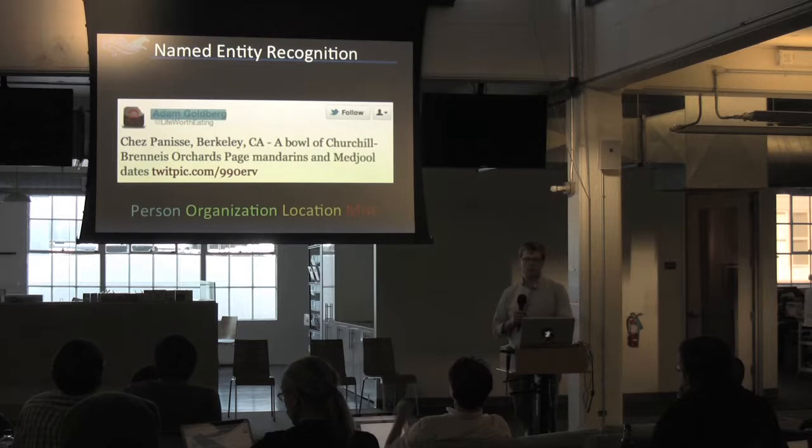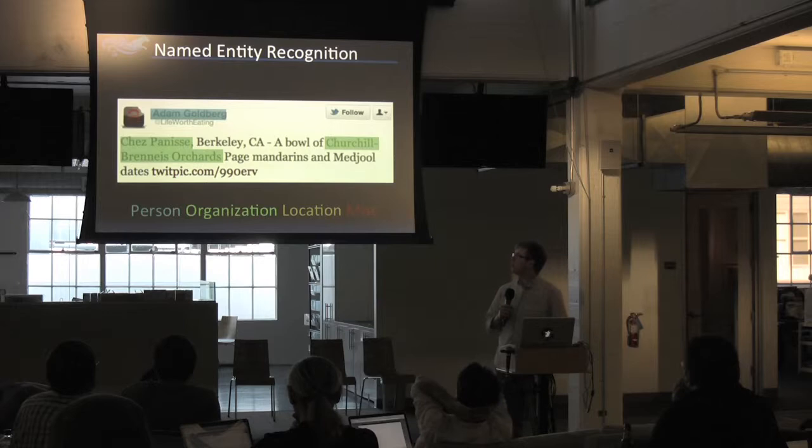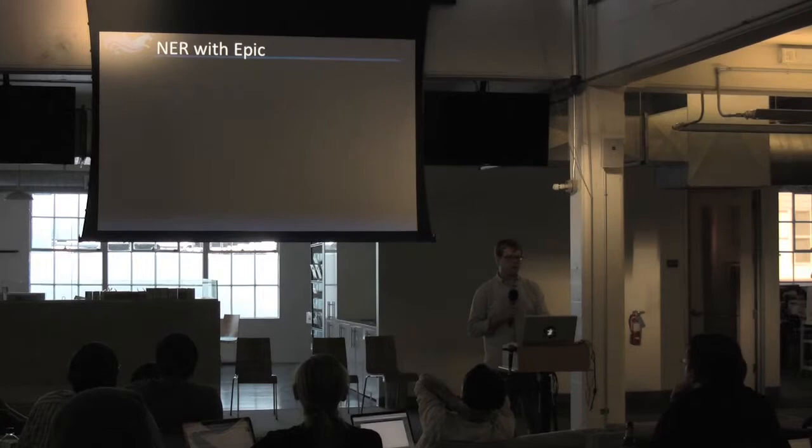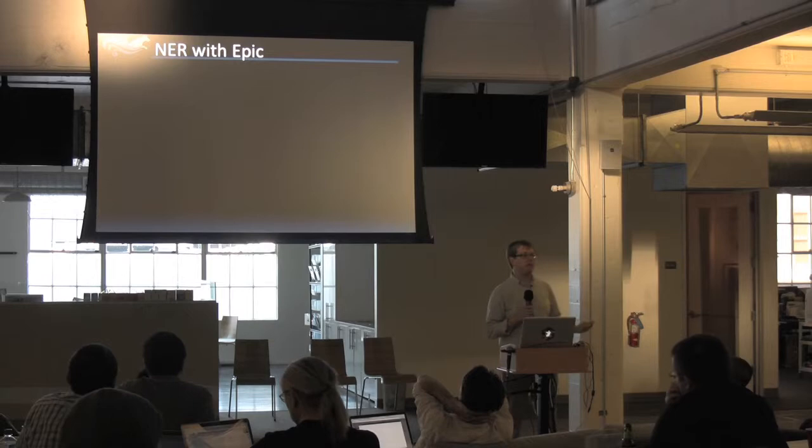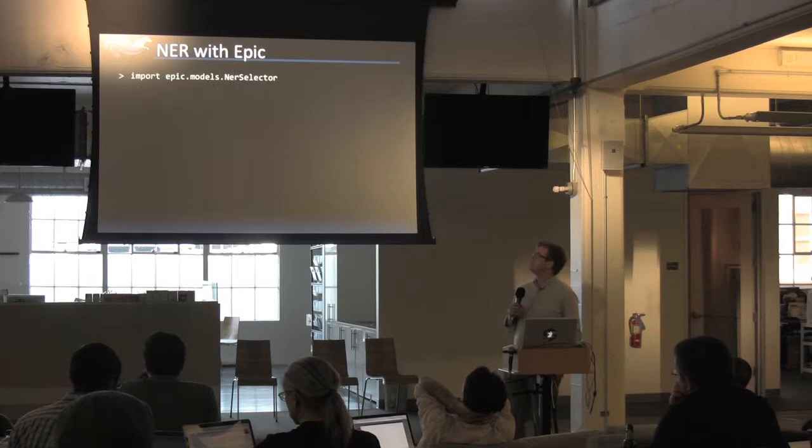So Adam Goldberg is a person. Chez Panisse and Churchill-Bernet orchards are organizations. Berkeley is, of course, a place. Epic has a pre-built named entity recognition model for English, and it's pretty easy to use.